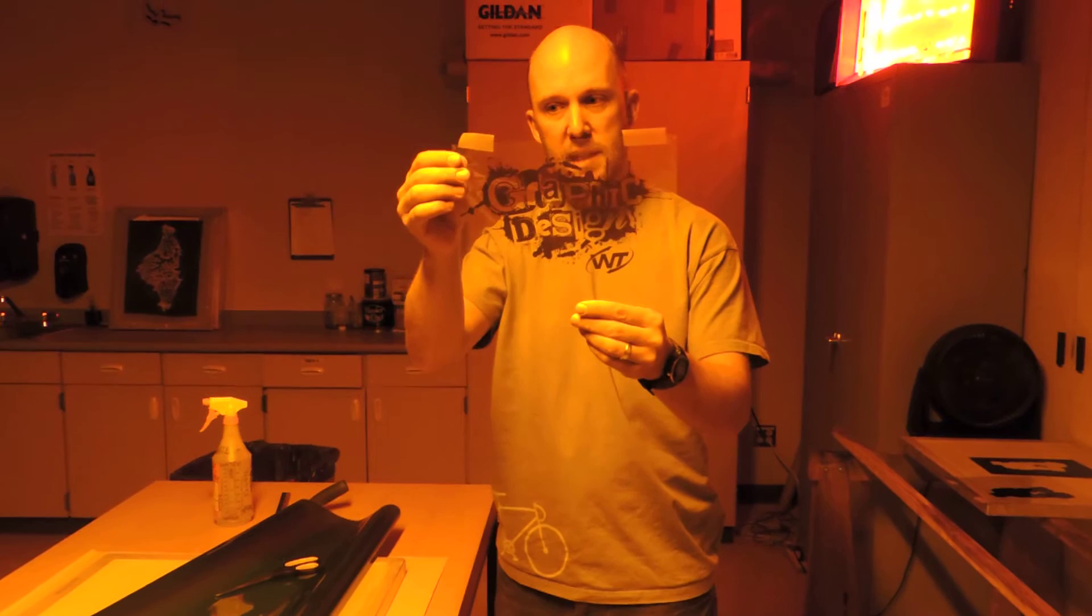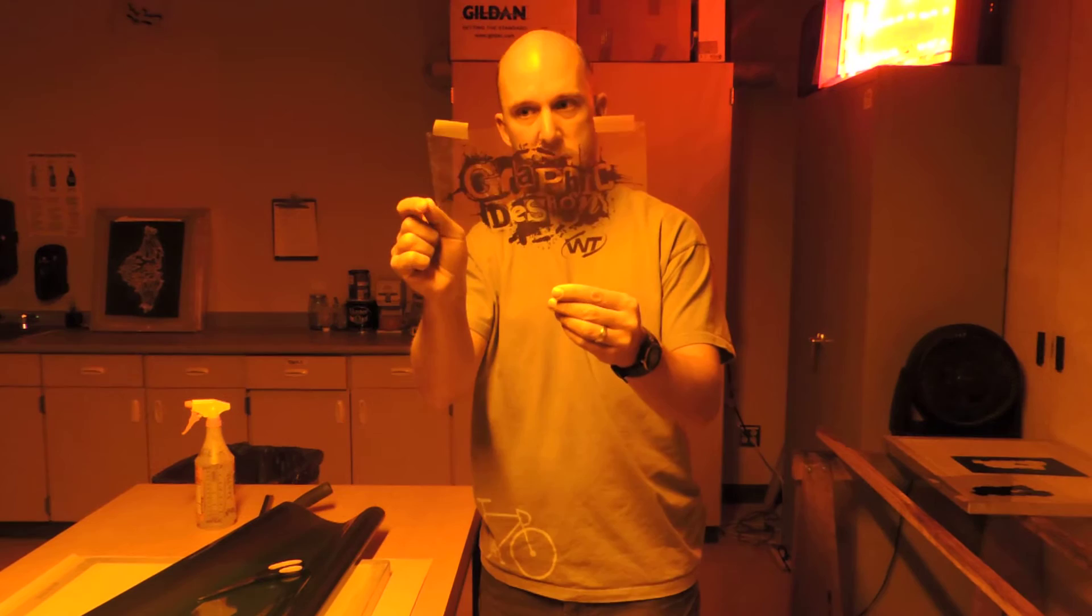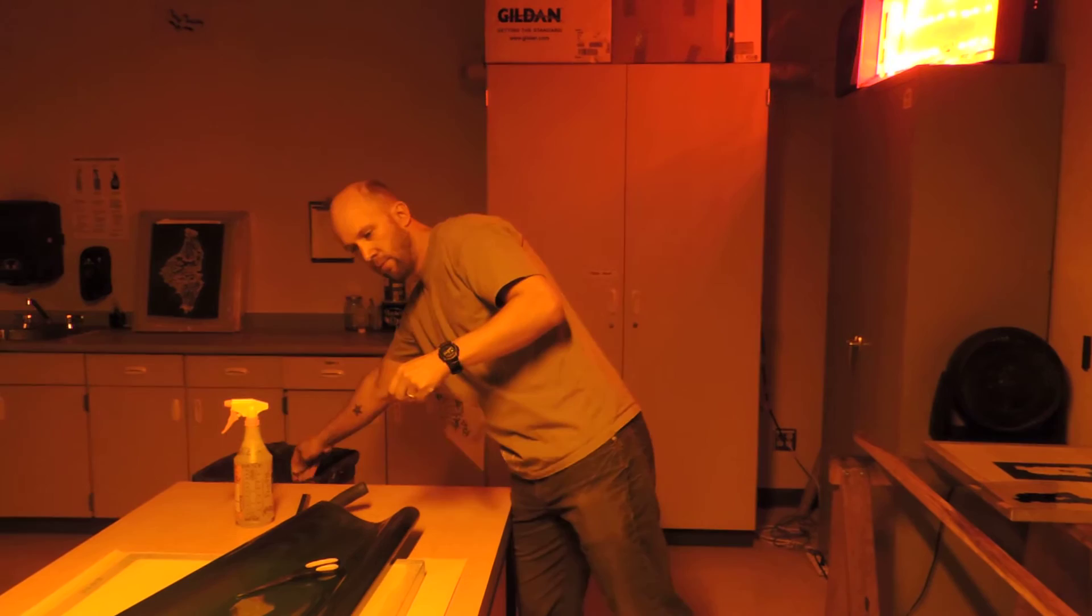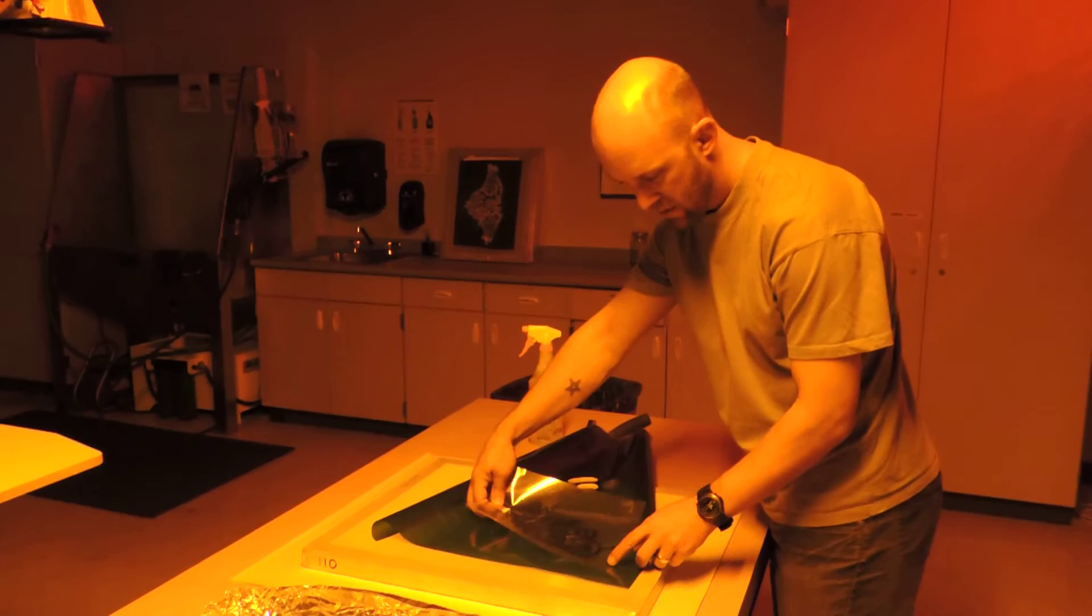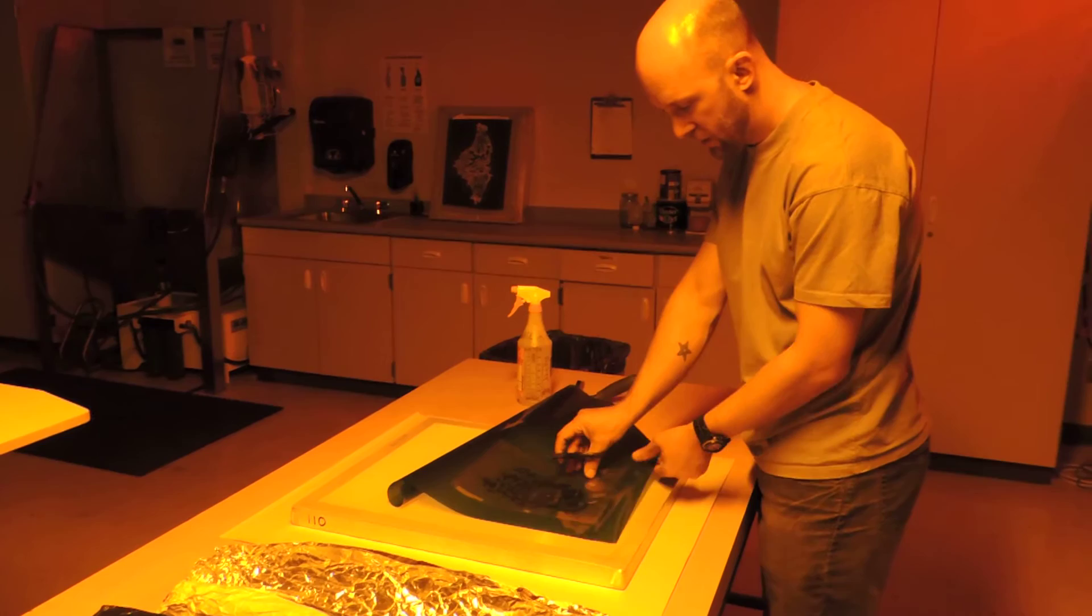Now I need to make sure that my emulsion is at least an inch to two inches larger than my image that is on my transparency. So I can trim this down to fit my image that is here.